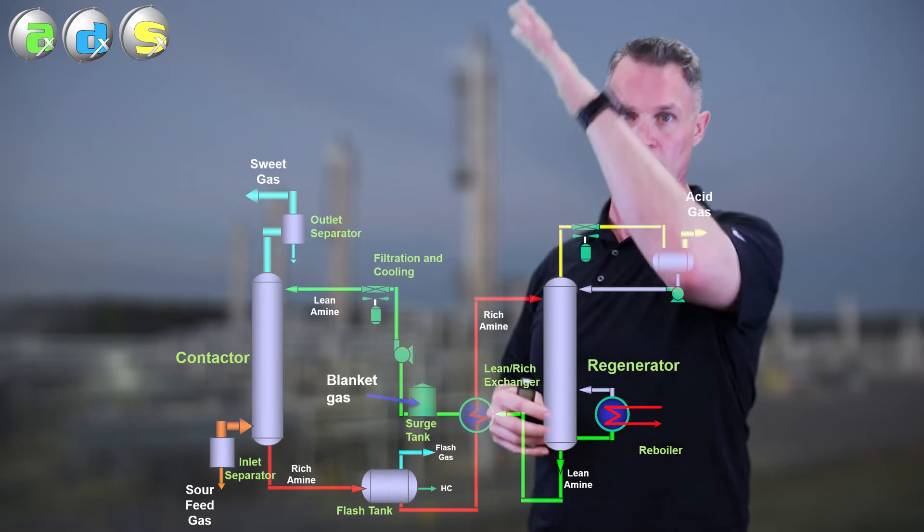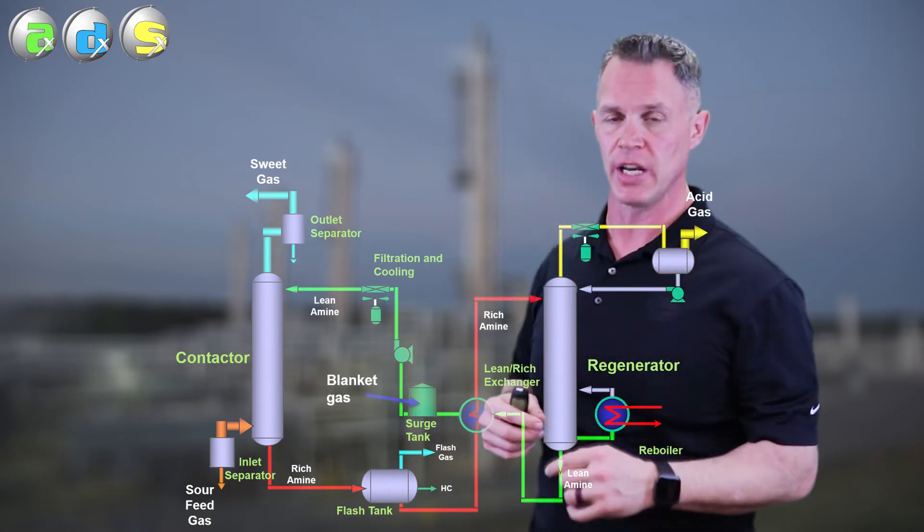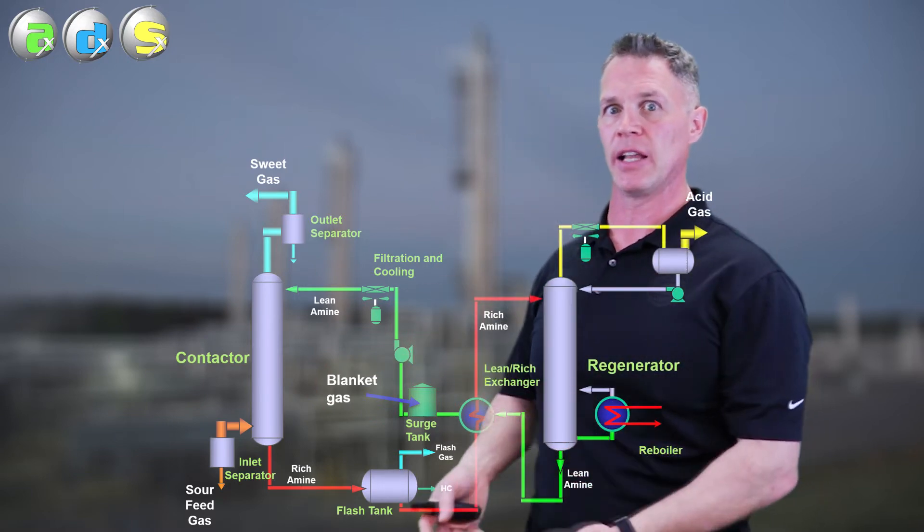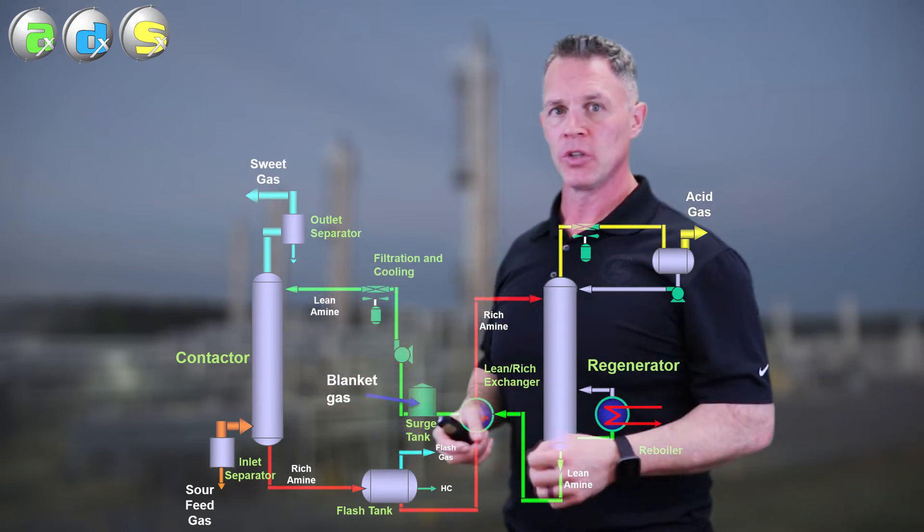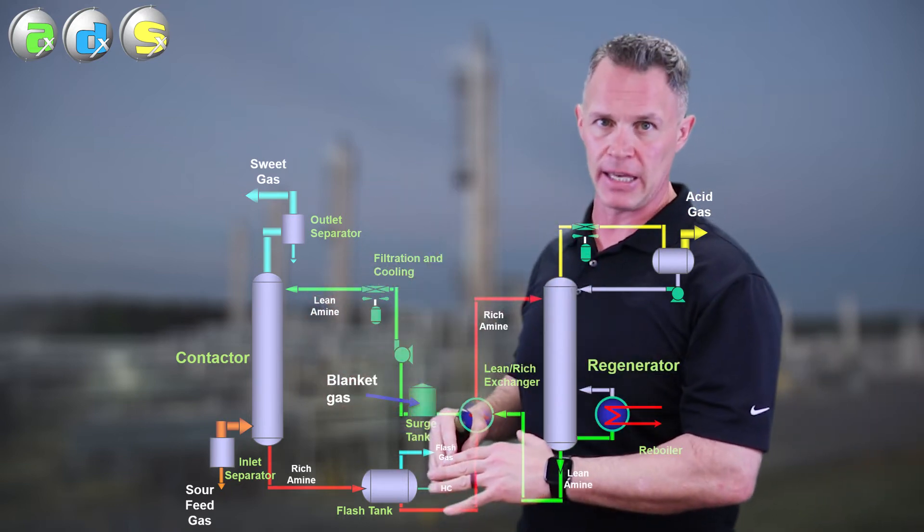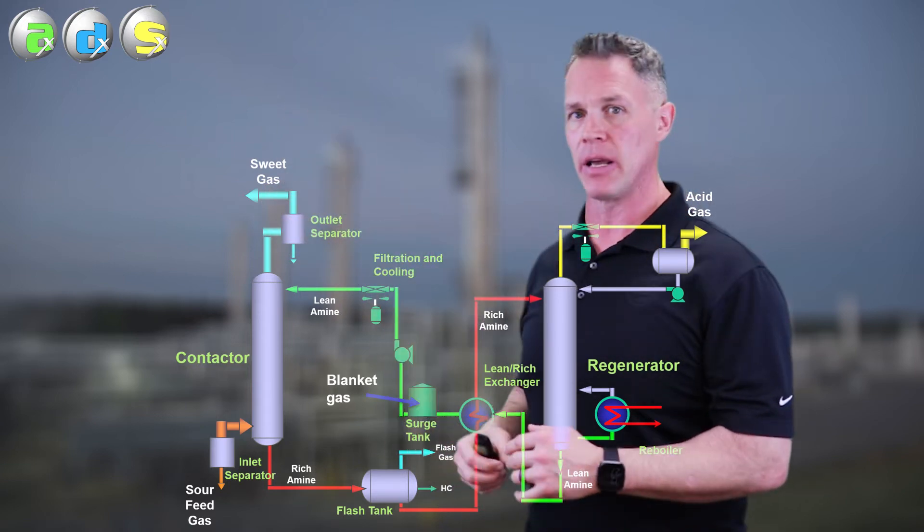The surge tank's whole purpose is to absorb surges in amine circulation rate, so that level does go up and down. The tank's just at atmospheric pressure, so if that level drops and we don't have blanket gas on, you will suck air into your amine system.